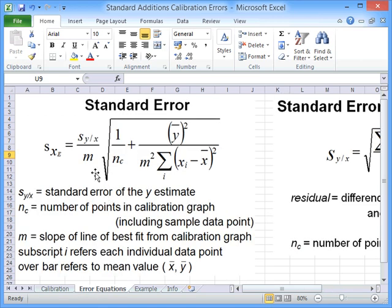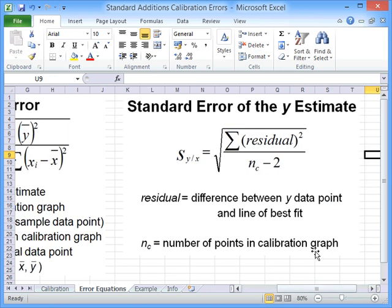So the error equation looks a bit like this. The standard error of this extrapolated x value is given by this equation, where we've got terms like the standard error of the y estimate, the gradient from the line of best fit, the number of calibration points including the sample data point, the mean value of y, and then the terms down here - again we've got gradients, each individual x value minus the mean x value squared, and all of those summed up. The standard error of the y estimate is given by the equation shown here.